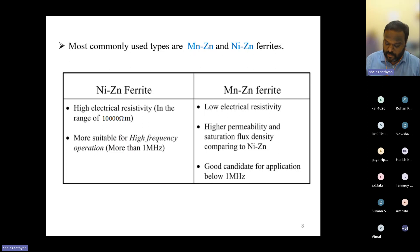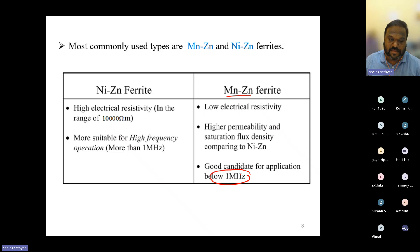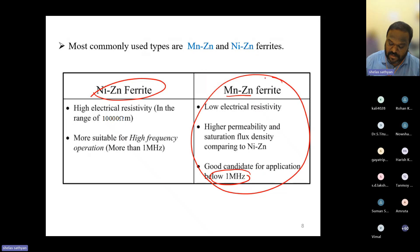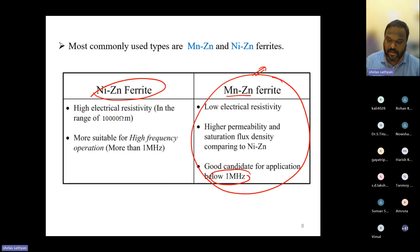For high frequency, manganese-zinc ferrite cores can be used up to one megahertz. If you need more than one megahertz, nickel-zinc ferrite cores are commonly used. Most power electronics applications will use manganese-zinc ferrite cores, which are widely available in local markets and can operate up to one megahertz.